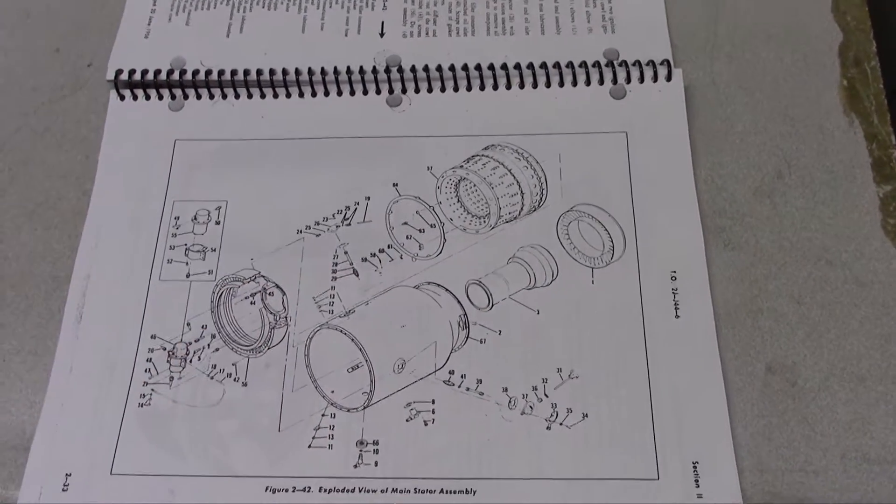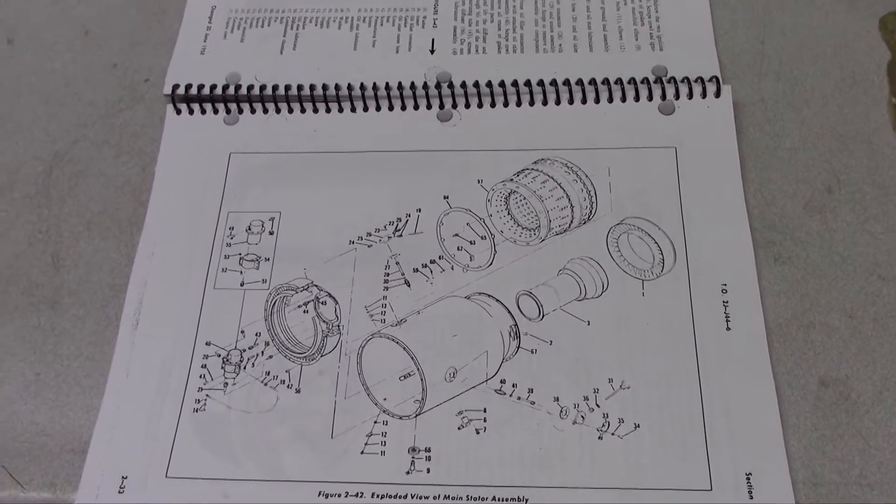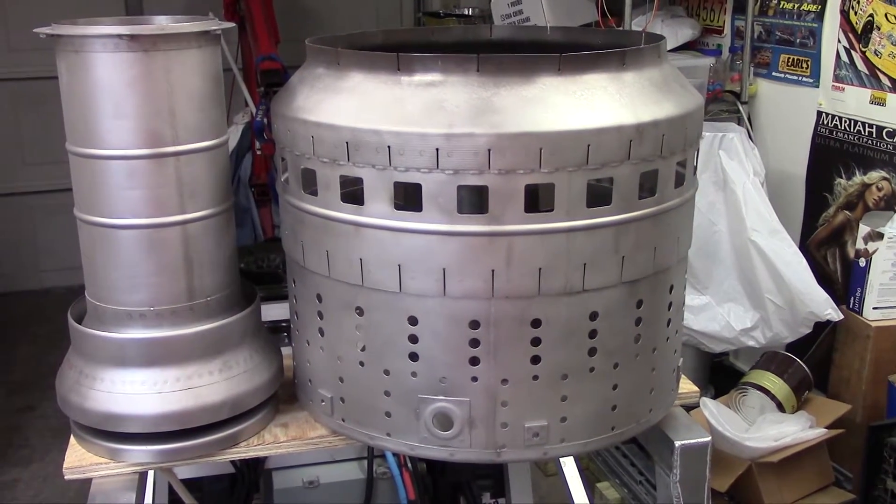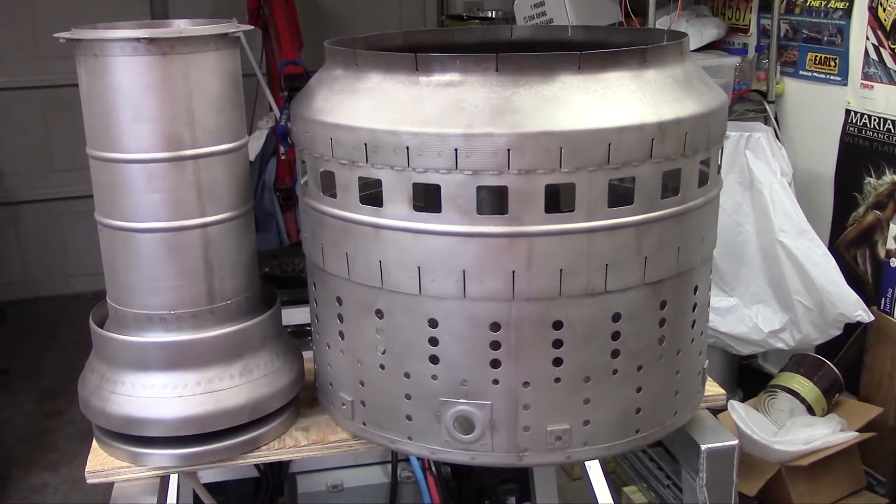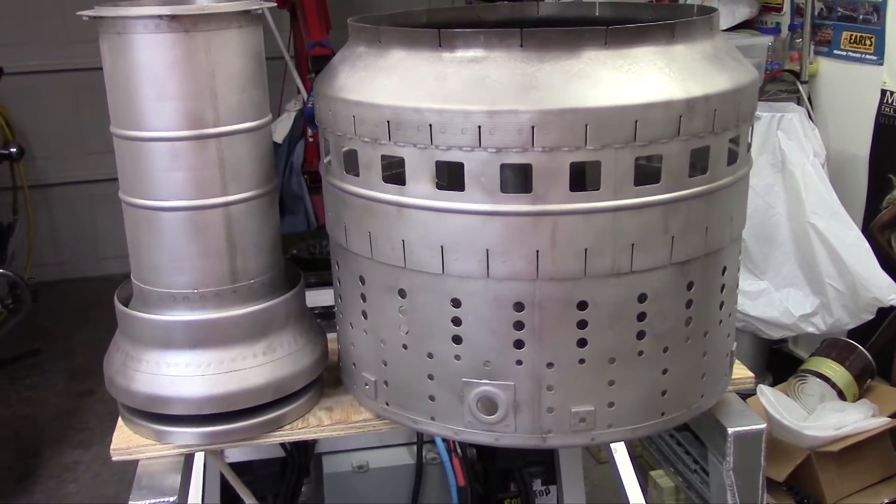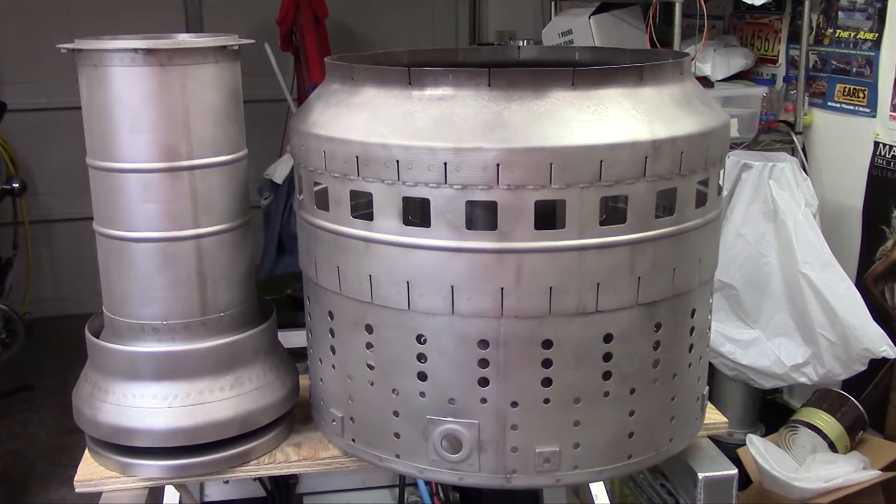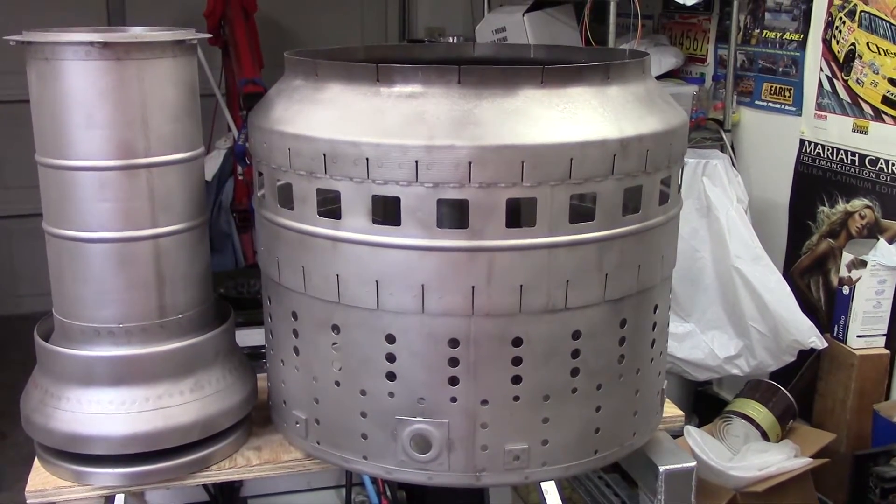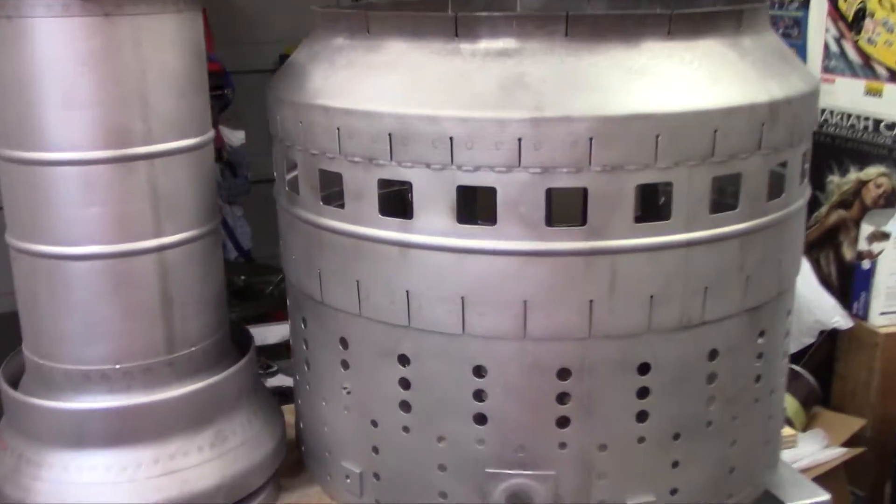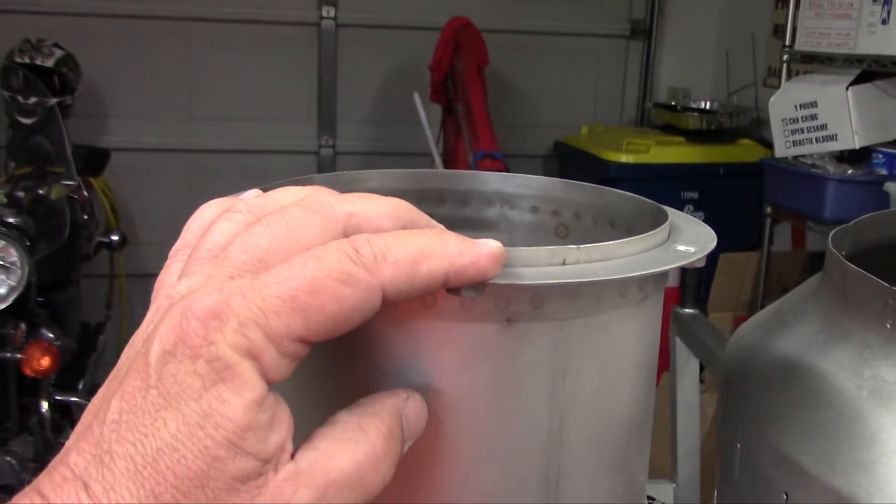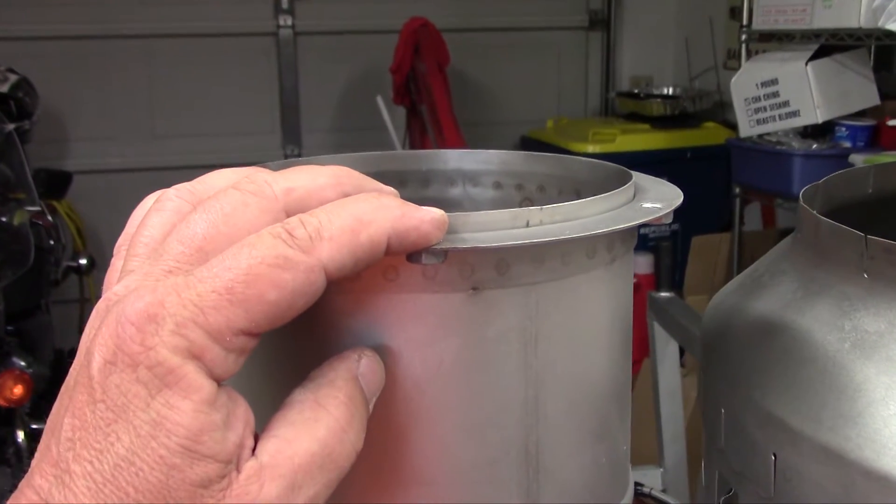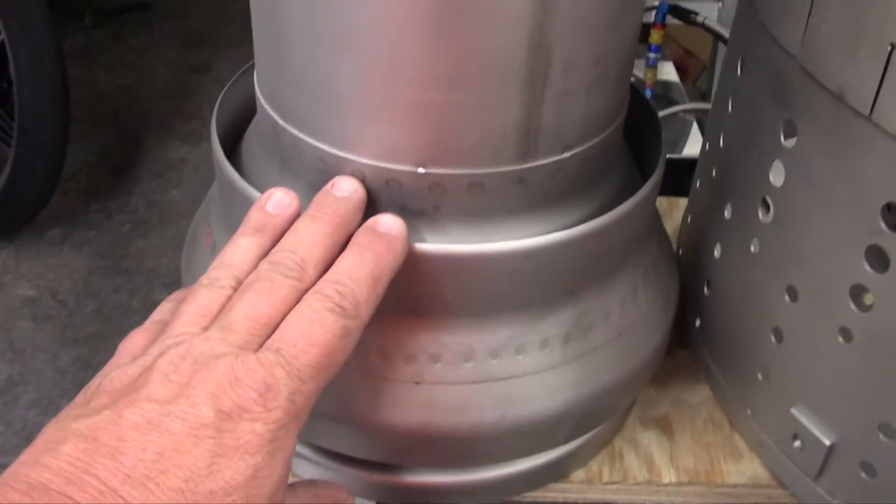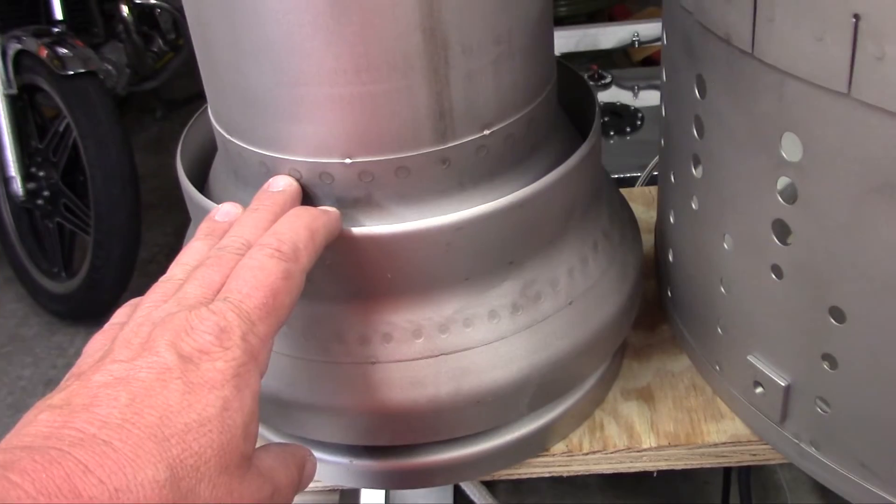The next major component is this combustion chamber. We have the combustion chamber, the large part, and the smaller part on the left is the combustion chamber inner housing, which covers the shaft. This flange attaches to the diffuser housing. This would be the front end of the housing, and this would be the back end, right before the turbine nozzle.